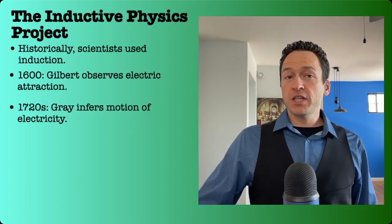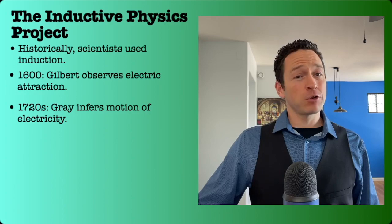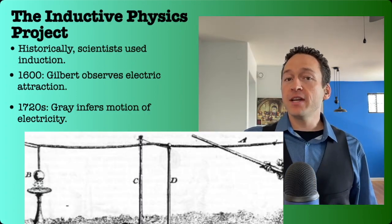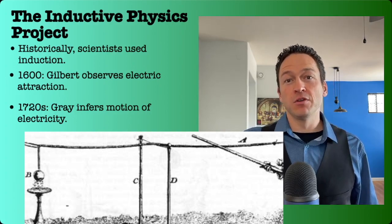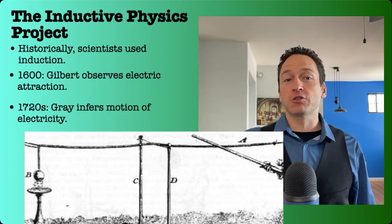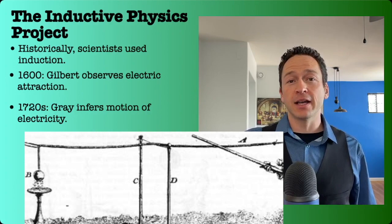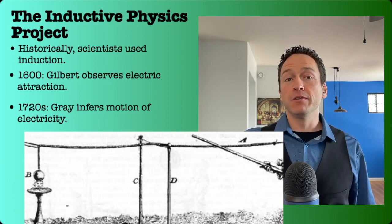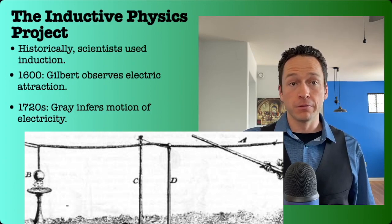In the 1720s, Stephen Gray inferred that this electric property could move from one object to another. He couldn't actually see the electricity move, but he could see that an electric body could make another body electric when the two were connected with string. So, he was able to infer that electricity could move through string.